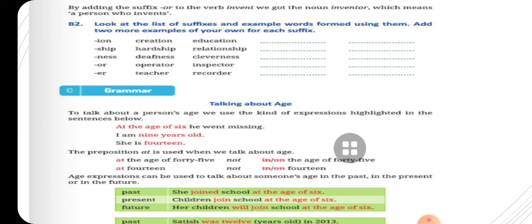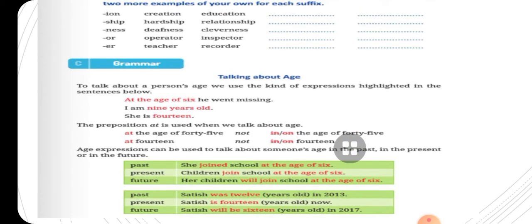Age expressions can be used to talk about someone's age in the past, in the present, or in the future. Past: she joined school at the age of 6. Present: children join school at the age of 6. Future: her children will join school at the age of 6. In the past, Satish was 12 years old in 2013. Present: Satish is 14 years old now. Future: Satish will be 16 years old in 2017.